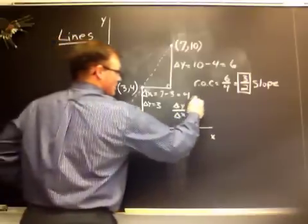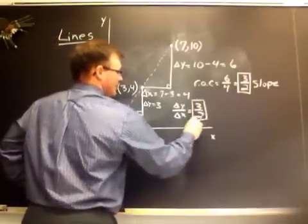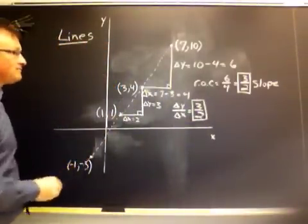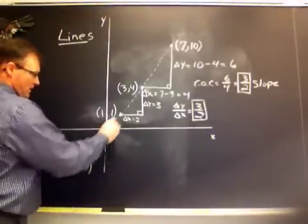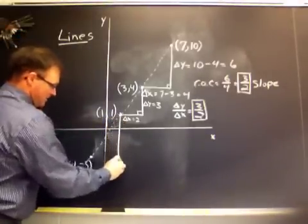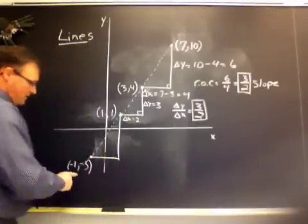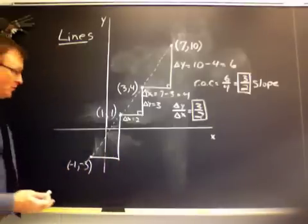So we have the same slope between these two pairs of points. They're in a line. But now let's take a look at the third one and see whether we get the same result. Be careful, negative signs here make things a little bit more complicated.